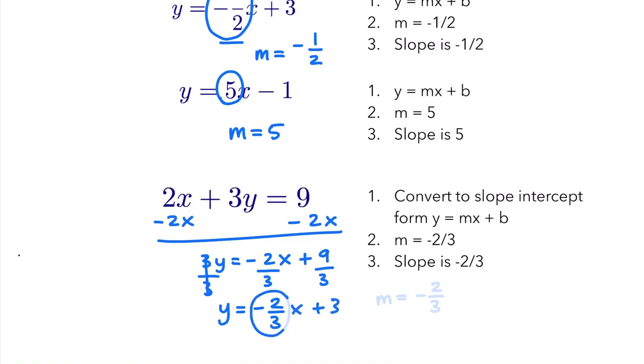So again, we look at the number that's next to the x, so our slope in this equation is going to be negative two over three.